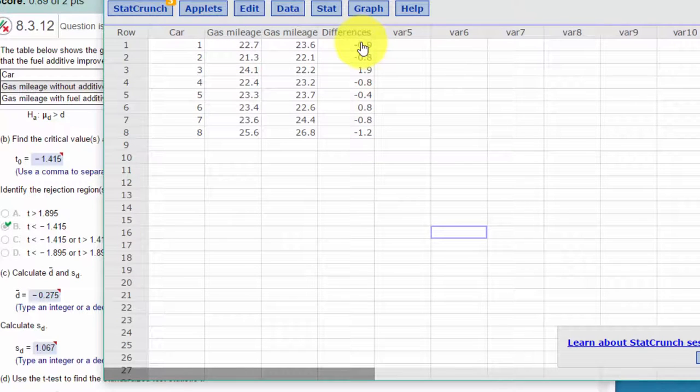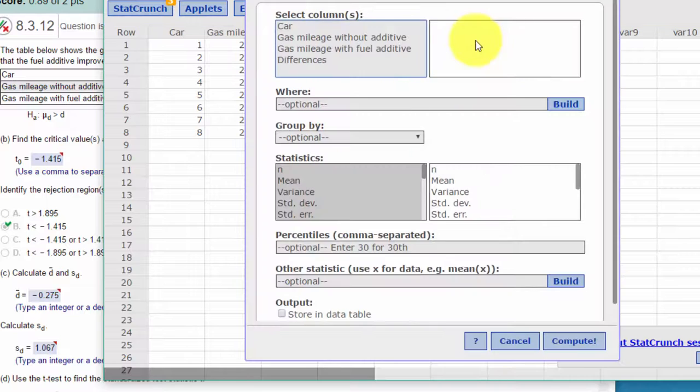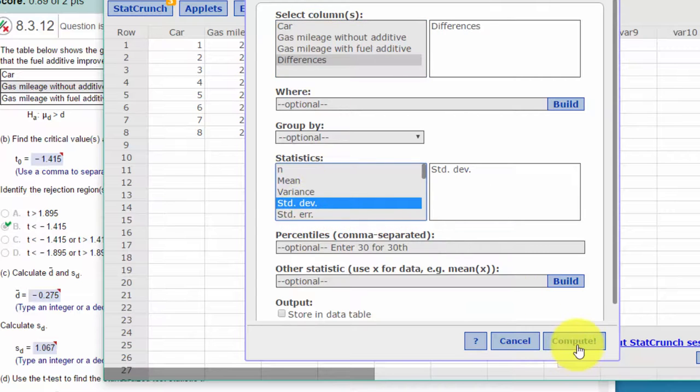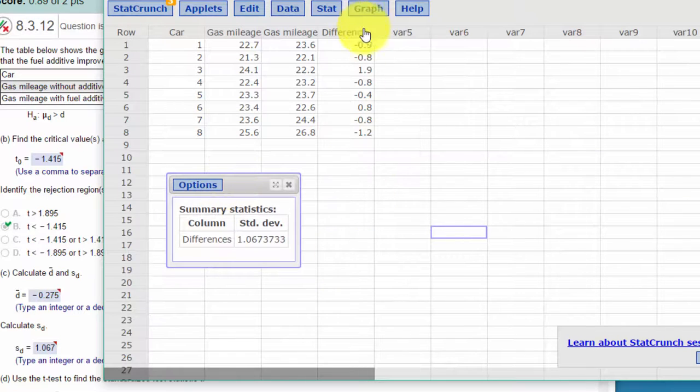Here are the differences. Now all we need is the standard deviation of that, and we can get that very quickly with summary stats columns. I want the standard deviation on the differences, so I'll compute it and we get a standard deviation of 1.067, which is the answer in the test.